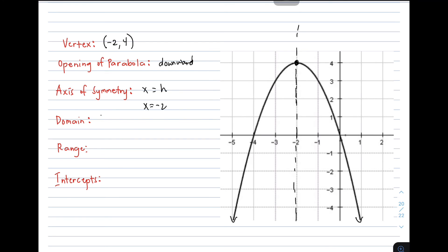For the domain, it's the same as before: x such that x is an element of all real numbers. Now for the range — since the parabola opens downward, the vertex is the maximum point. Because the opening is downward, we use less than or equal. The k value is 4, so the range is y such that y is less than or equal to 4.